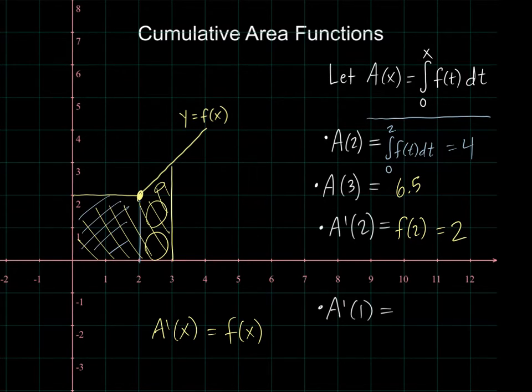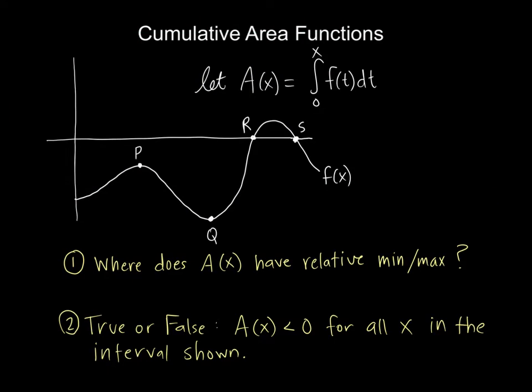A prime of one is the same as f of one because of the second fundamental theorem. What's f of one? F of one is not the area accumulated from zero to one. That would be A of one. A prime of one is f of one, which is the height of this function at one, which is two also. At one and two, I have the same height of two. A prime of three would be three. A prime of four would be four. When you take the derivative, you cancel out that integration process, and you're no longer looking at the area accumulated. You're looking at the height of the function.